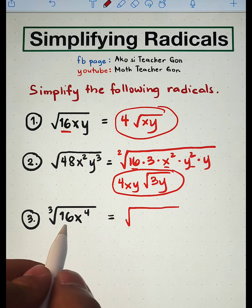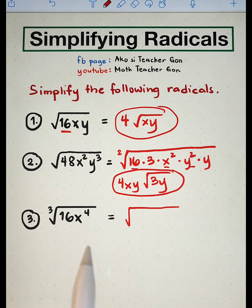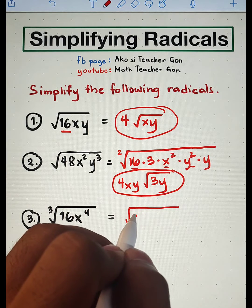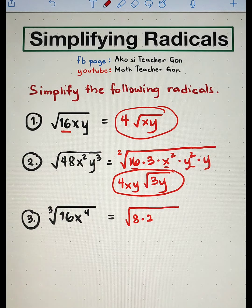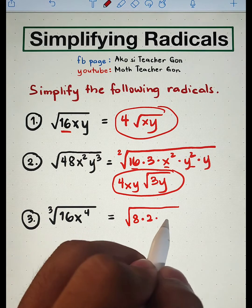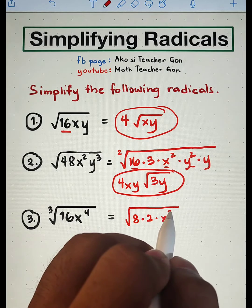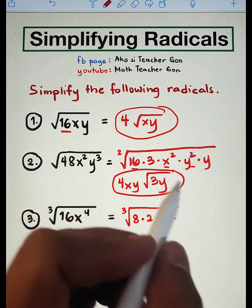Factor 16, wherein one of the factors must be a perfect cube. So that is 8 times 2, because 8 is a perfect cube. While this x to the 4th power can be factored out as x cubed times x.